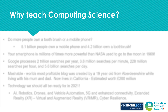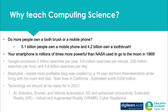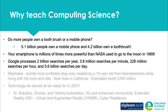I'd like to set the scene of what computing science technology looks like in the world around us, starting with some global interesting facts — a really good way to start computing science discussions with your learners. Do more people own a toothbrush or a mobile phone? It was the Mobile Marketing Association of Asia who made this claim, and research shows 5.1 billion people own a mobile phone and only 4.2 billion own a toothbrush, showing how important technology is in our lives. Your smartphone is millions of times more powerful than NASA used to go to the moon in 1969 — an amazing fact to share, linking up to the topic of space.